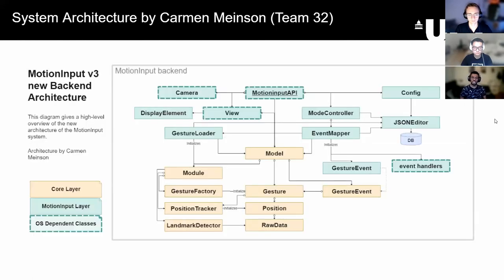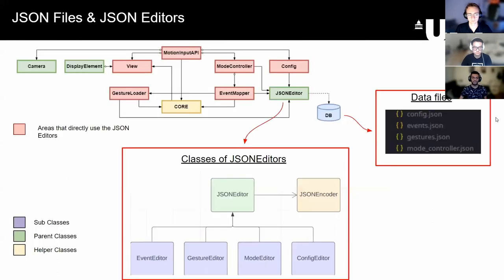In order to achieve these high-level requirements, we worked in close collaboration with Team 32 on the implementation of their new architecture for motion input. In order for motion input to be as configurable as possible, the means of storing data needed to be changed. The introduction of JSON editors into the MI architecture allows for an architecturally neutral way of storing and modifying saved settings.